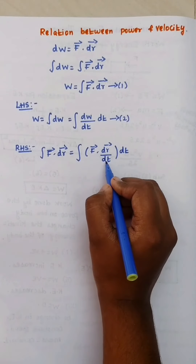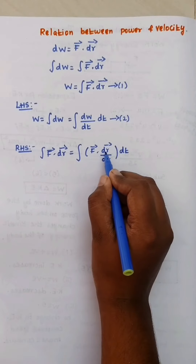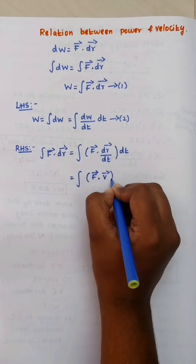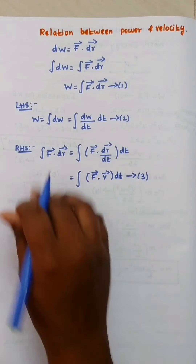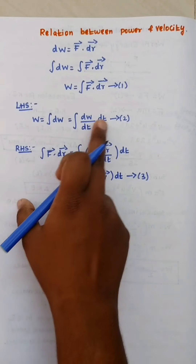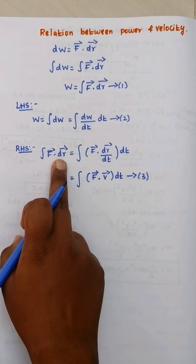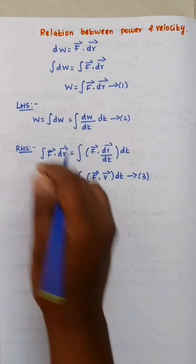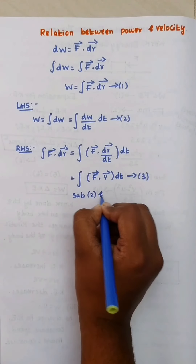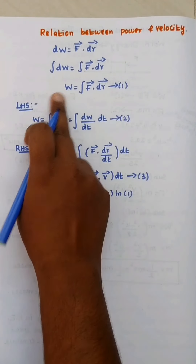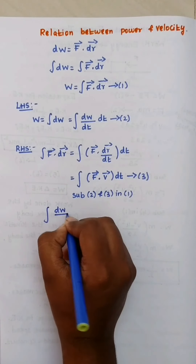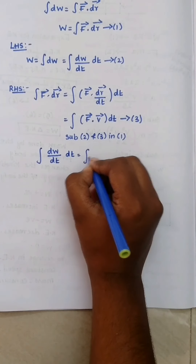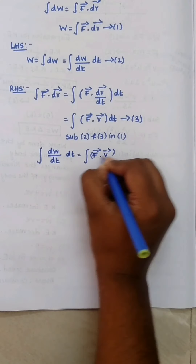Displacement by time is velocity. So in the term, dr/dt becomes velocity. Therefore the right-hand side becomes: integral of F vector dot V vector into dt. Substituting the second and third equations back into the first equation, W equals integration of dW divided by dt into dt, which equals integration of F vector dot V vector into dt.